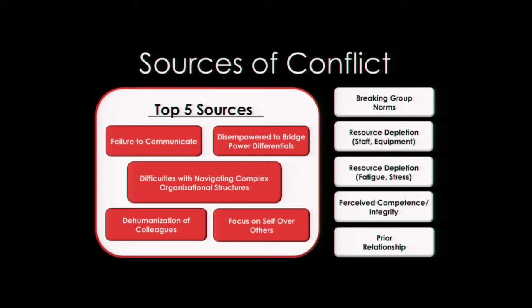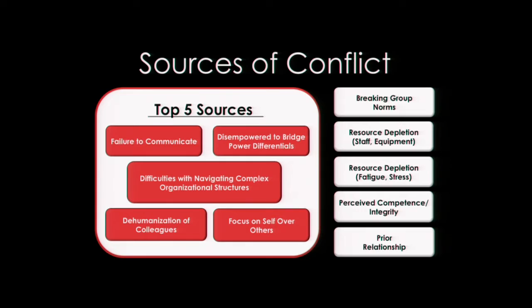Perceived competence and integrity — in the moment of conflict, individuals say maybe I'm not good enough; it's a self-imposed perception. But also it's the judgmental lens we place on our conflict: why aren't you good enough, shouldn't you know this by now? And prior relationship: we heard many stories where prior interactions didn't reach reconciliation or resolution, so the next encounter is just a setup — an unresolved prior interaction creating a downward spiral.